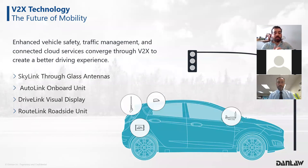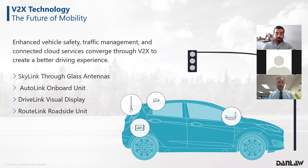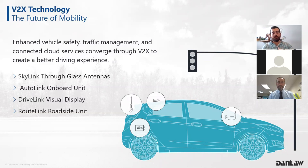Danlaw is at the forefront of V2X innovation, creating solutions that will enable the future of mobility. Our products include the Skyline through-glass antennas with shark fin that act as the communication link between the OBU and RSU, the OBU itself which collects real-time data, the RSU which communicates with infrastructure and surrounding vehicles, and the driver visual display — the HMI — which shows all alerts and notifications on screen. This is an entire ecosystem solution that can be provided with Danlaw.